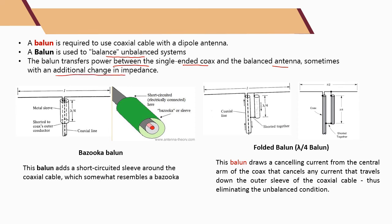There are two examples of baluns: the bazooka and the folded balun, also known as the lambda over 4 or quarter-wave sleeve balun. The idea is that it produces a short-circuit sleeve so that the currents on both arms are shorted together, resulting in equal current magnitude on both arms.